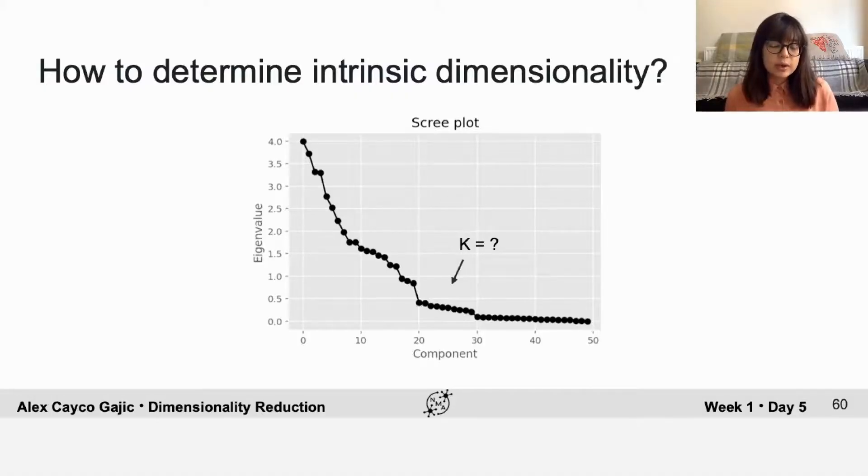There are a couple of different ways to get around this. One is to look for an elbow or a kink in the scree plot, which could suggest that some of the eigenvalues are due to signal and separate those from the ones that are probably due to noise, which would be lower.